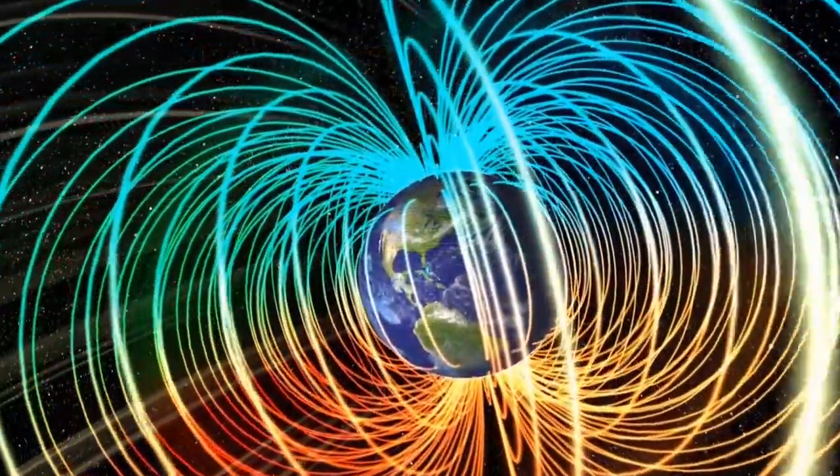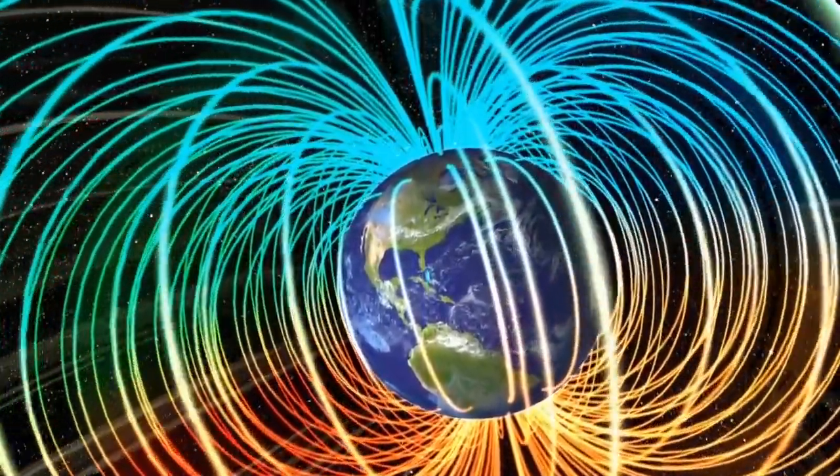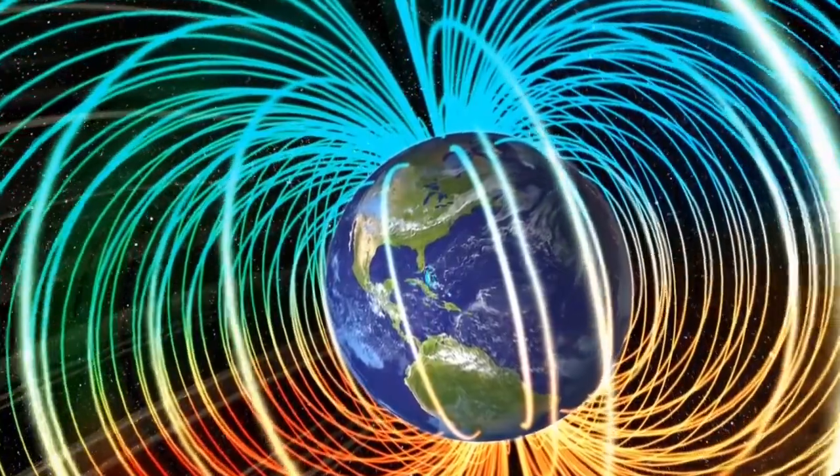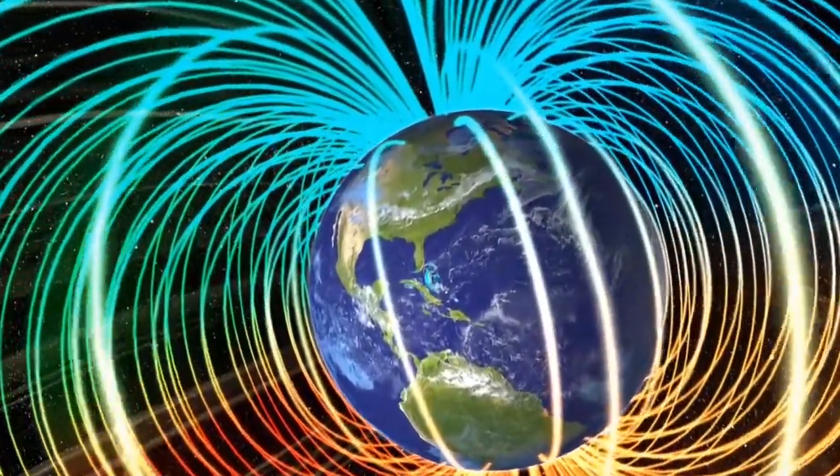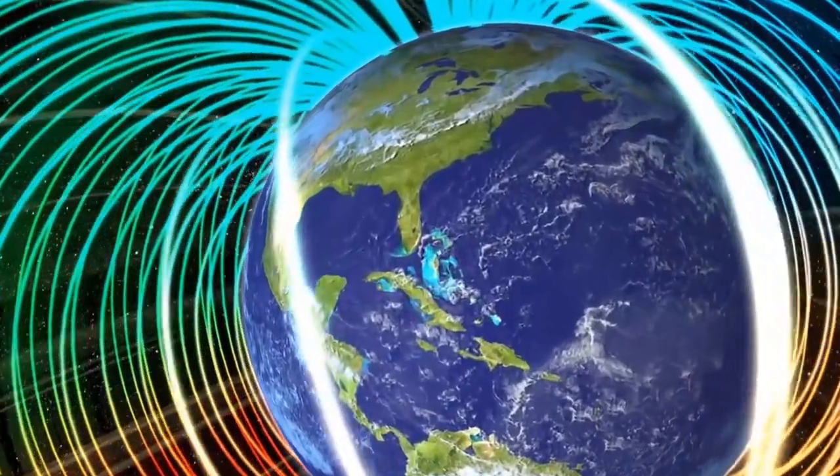Creating this global magnetic shield required special conditions. Earth had to be large enough to have a molten core and had to rotate fast enough to produce an electrical current that generates the planet's magnetosphere.